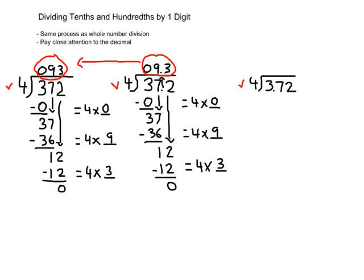Now we'll do 3.72 divided by 4 — the same process. How many groups of 4 can go into 3? 0 times. 0 goes over the 3. We do 4 times 0, which is 0. 3 minus 0 is 3. However, this time the decimal is after the 3, so immediately upon reaching the 3, the decimal goes up into the quotient next to the 0.